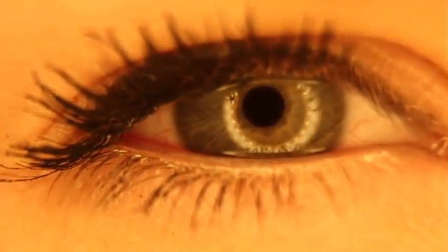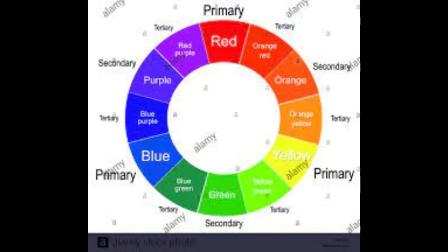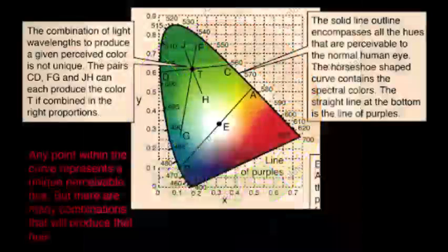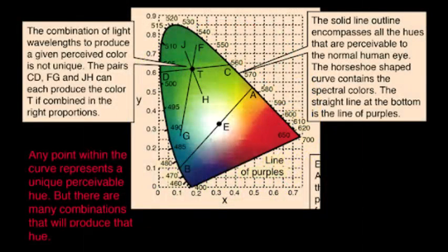Finally, the manner in which the brain responds to visual stimuli must also be considered. Even under identical conditions, the same object may appear red to one observer and orange to another. Clearly, the perception of color depends on vision, light, and individual interpretation.